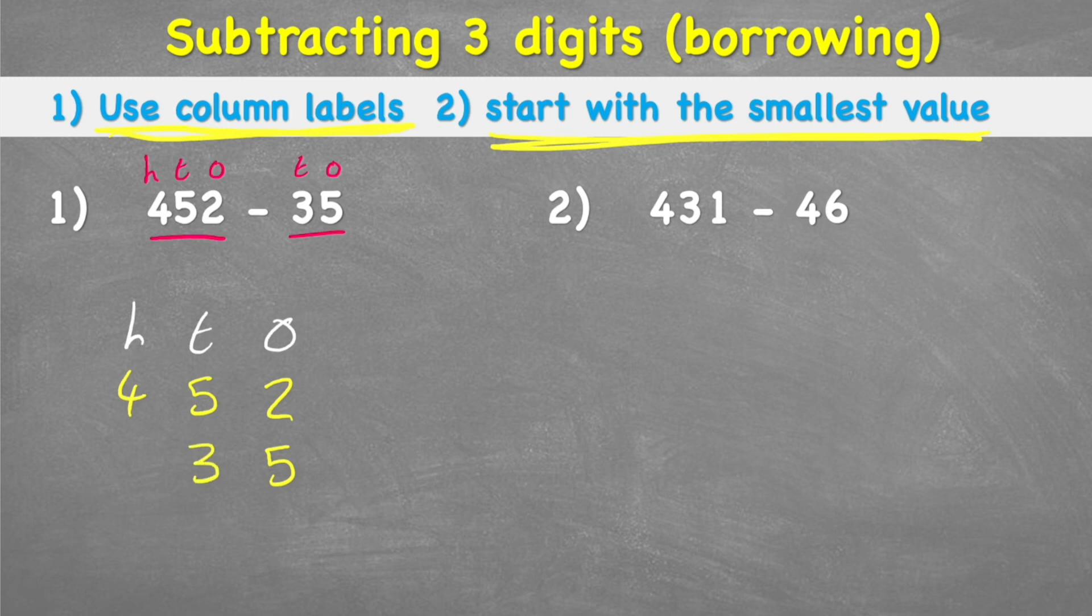Now I have this little gap here underneath the 4 and next to the 3 and then here I'm going to put a placeholder as 0. It doesn't change my 35's value, it's just going to help us with the subtraction. My equals line and my subtraction sign. Here we go. Now, my second step said to start with the smallest value. And in this case it's in my 1s column.